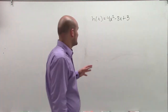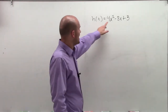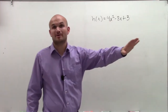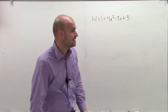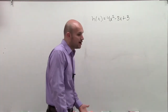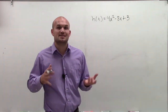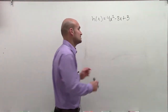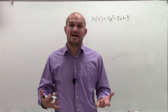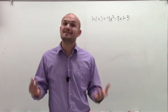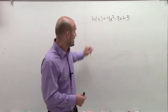When I look at a problem like this, the first thing I notice is that I have a degree 2. So therefore, that means I can only have a maximum number of two zeros. What Descartes' rule of signs says is I need to look at the variations of the signs of my coefficients. However many variations of signs I have, that's how many positive real zeros I have for h of x.